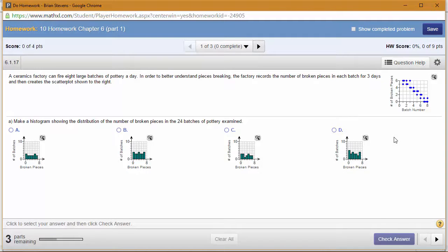Looking at the univariate data, we only want to look at one variable. We want to look at number of broken pieces, which is on the x-axis over here but on the y-axis over here.